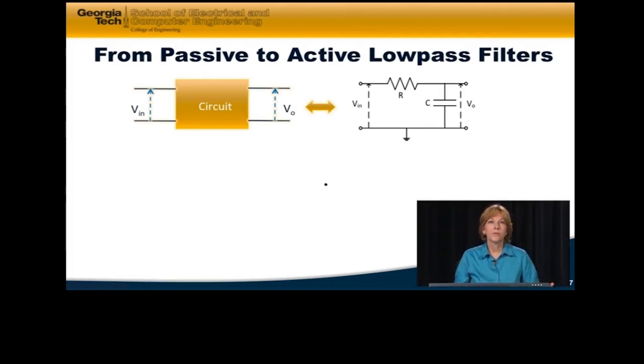So going from a passive to an active filter is probably the easiest way to design your first filter, is to look at a passive filter, which is an RC circuit. This is a low-pass filter where my input is right here, and my output is measured across this capacitor. And so this is the generic form for this circuit.